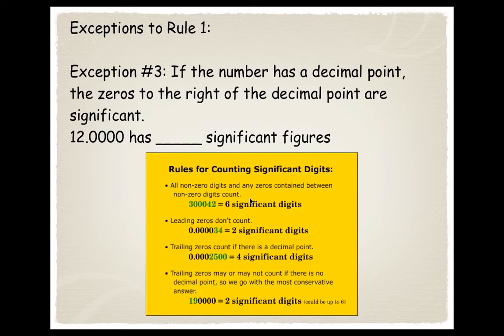I kind of like this chart, it has some good examples on it. Exception number three to rule number one - gotta love science, exceptions here. If the number has a decimal point, then the zeros to the right of the decimal point are significant. So 12.0000 has 1, 2, 3, 4, 5, 6 significant figures. Again, I like this. I'm not going to read it to you. It sums it up fairly nice.